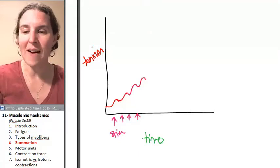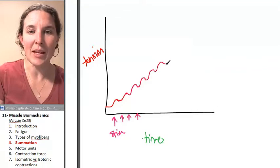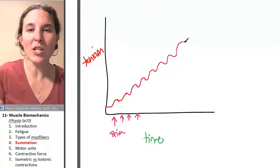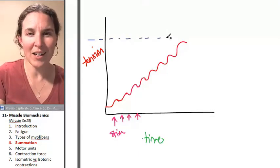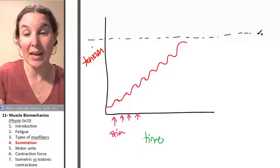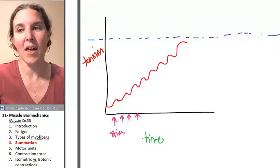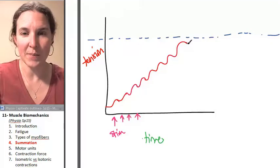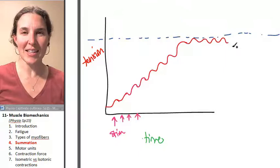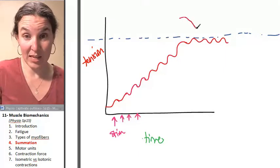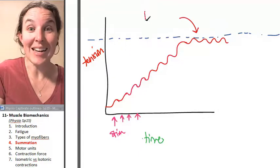Now watch what happens eventually over time. We keep stimulating at this pace. Well, eventually we're going to reach this concept where, you know what, you really can't create more tension than the maximum tension. And if you keep stimulating at the same rate, you create this phenomenon called tetanus.